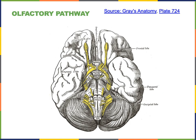The axons of olfactory receptor cells travel in the olfactory nerve, cranial nerve number one, in order to enter the cranium and form synapses with mitral cells in the olfactory bulbs of the brain.